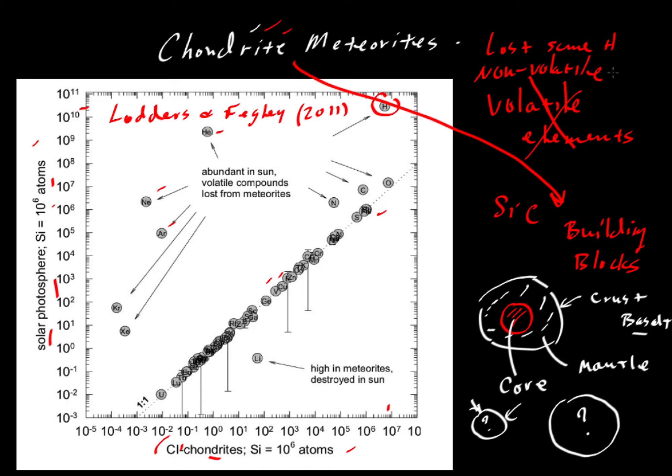So Earth, Moon, Mars, Venus, they might veer a little bit away from chondritic and solar compositions, but if you add them all up, they should roughly look like the solar photosphere, and chondrites indeed do. That's beautiful.